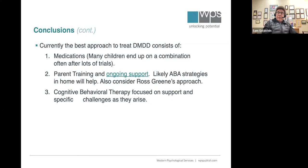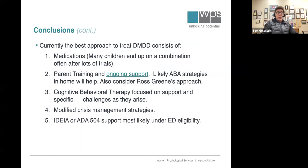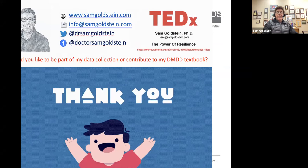Some kind of parent training is needed — training that teaches parents to manage crises without getting out of control, to manage violent and aggressive behavior. I think cognitive behavioral therapy for support would be beneficial. Teachers need training to manage emotional and behavioral crises and outbursts of children at school. Most likely it's ED eligibility. We should reasonably consider CAM treatments — I'm not recommending an exorcism, but I might recommend relaxation training.